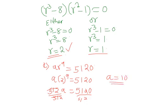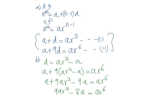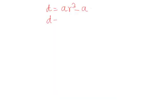Now with the values of A and R, we can find D. From equation 1, D is equal to AR cubed minus A. So D equals 10 multiplied by 2 to the power 3, minus 10. 2 to the power 3 gives 8; multiplying by 10 gives 80, and 80 minus 10 gives 70. So the value of D is equal to 70.